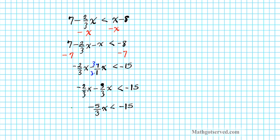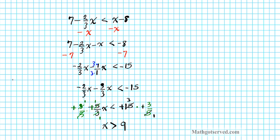Multiplying both sides by negative 3/5: on the left side we get x. Since we multiplied by a negative, the inequality symbol reverses — less than becomes greater than. On the right side, negative 3/5 times negative 15: minus times minus is plus, 5 divides into 15 three times, and 3 times 3 is 9. The final answer is x is greater than 9.